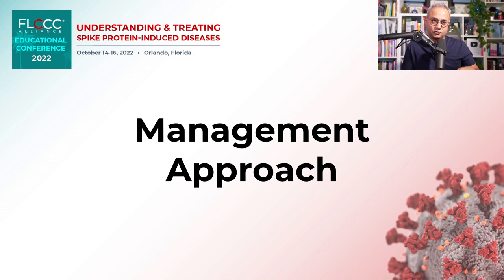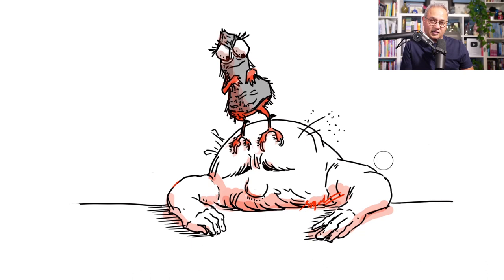Now let's take another journey of spikopathy, more towards the endothelium, as a summary in bigger terms. We have seen the mechanisms in more detail. Now let's see what kind of damage spike can do to blood vessels.